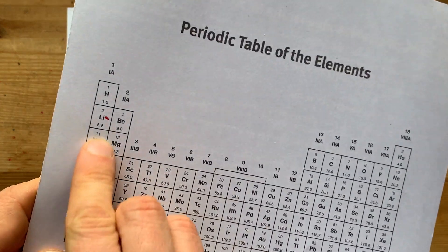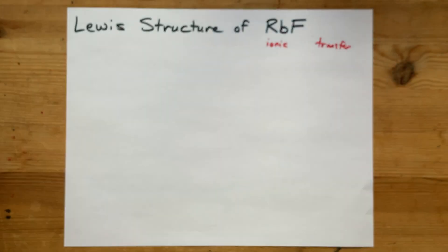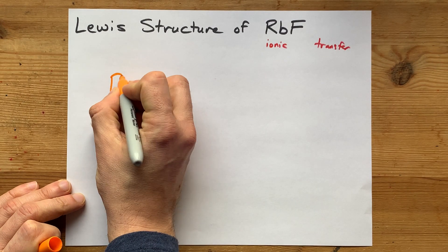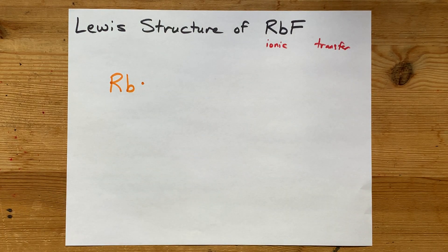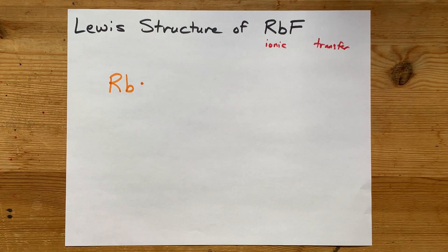Rubidium, the alkali metal in group 1, has one electron in its outer shell. There you go. RB with the symbol with its one valence electron.